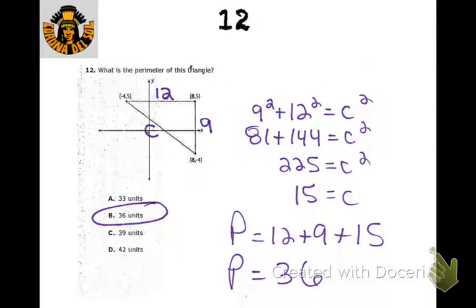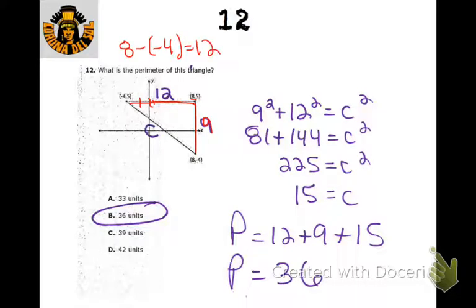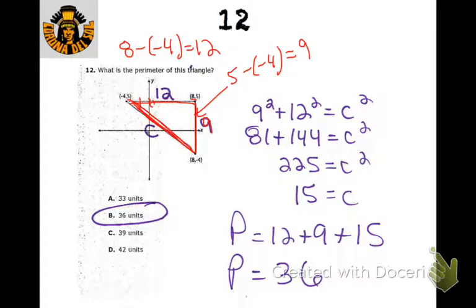Perimeter means you add up all the side lengths — the outside of the polygon. You can count units: this is 9 units, this is 12 units. To get 12, you do 8 minus negative 4. To find the 9, you do 5 minus negative 4. For the diagonal, we use the Pythagorean theorem — anything diagonal, use Pythagorean theorem. So 9 squared plus 12 squared equals c squared. Taking the square root gives 15. Adding up all those lengths, we get 36 for the perimeter.